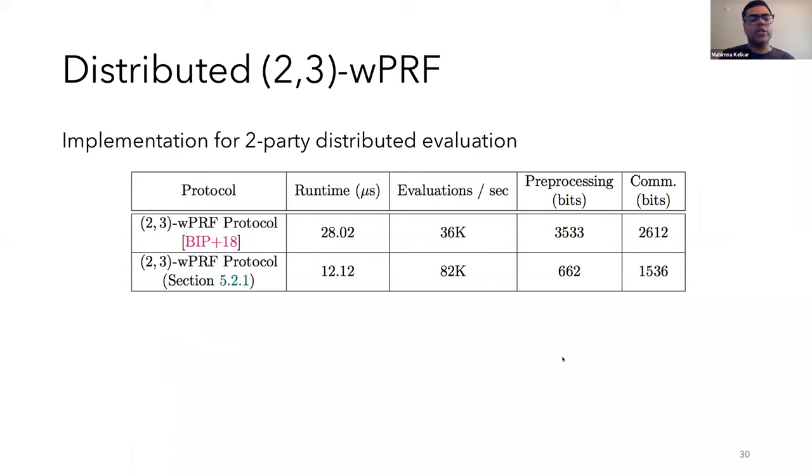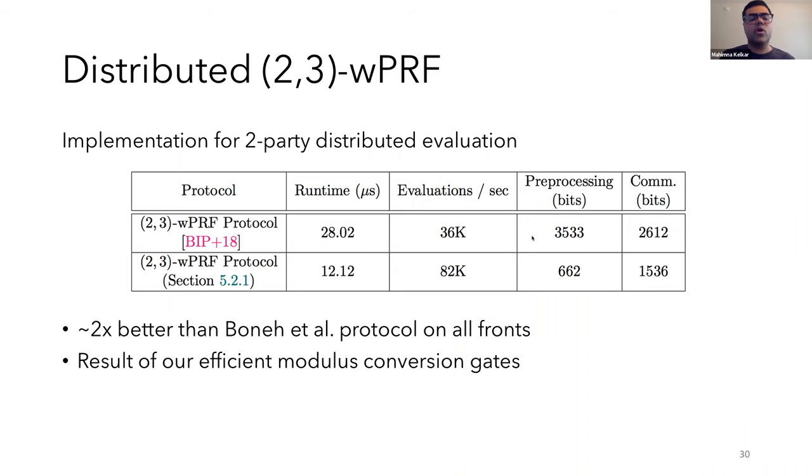We also implemented our two-party distributed evaluation protocol along with the original protocol from Boneh et al. And for this, we also used the optimizations I talked about in the previous slide. So we found that our distributed protocol is about two to three times better than theirs on all fronts, like preprocessing, computation, and communication. The core reason for this is our efficient modulus conversion gates versus Boneh et al., who used OT in their protocols.